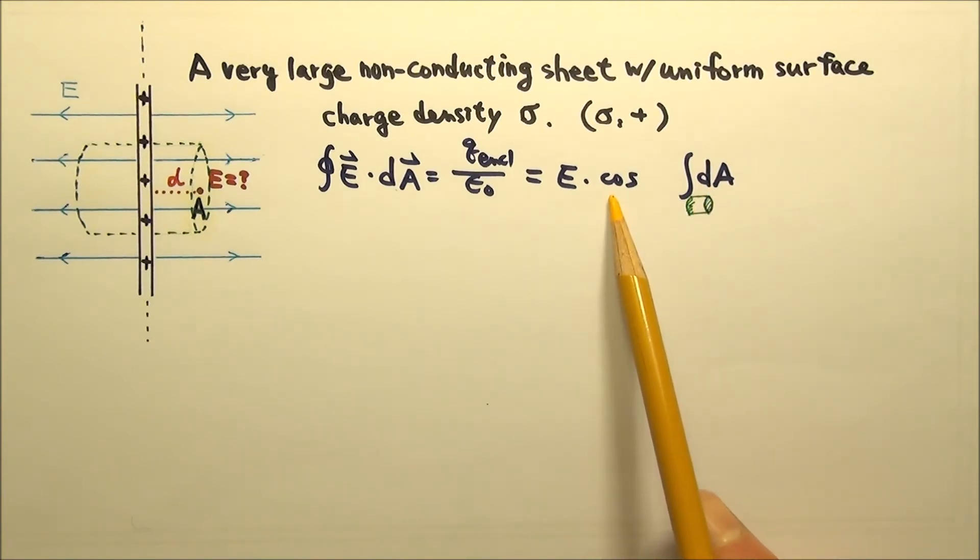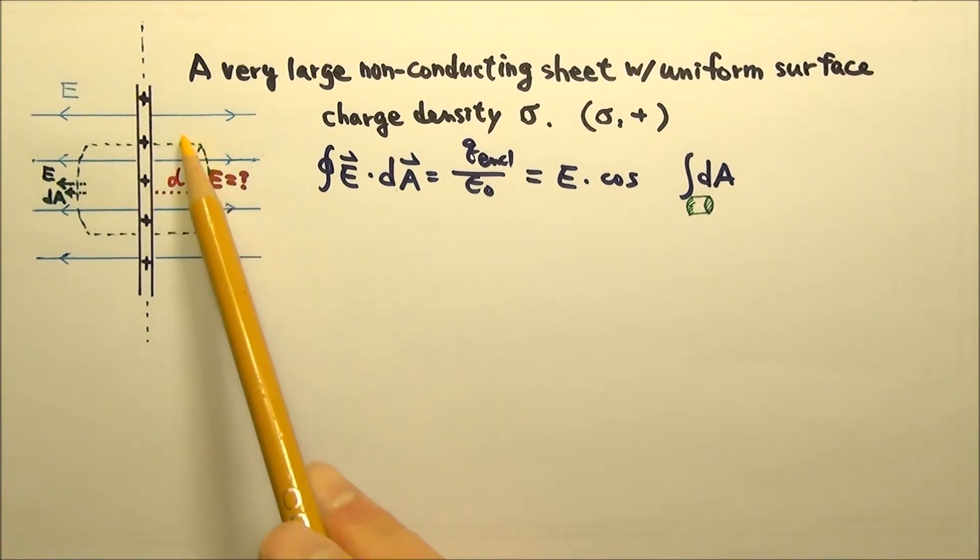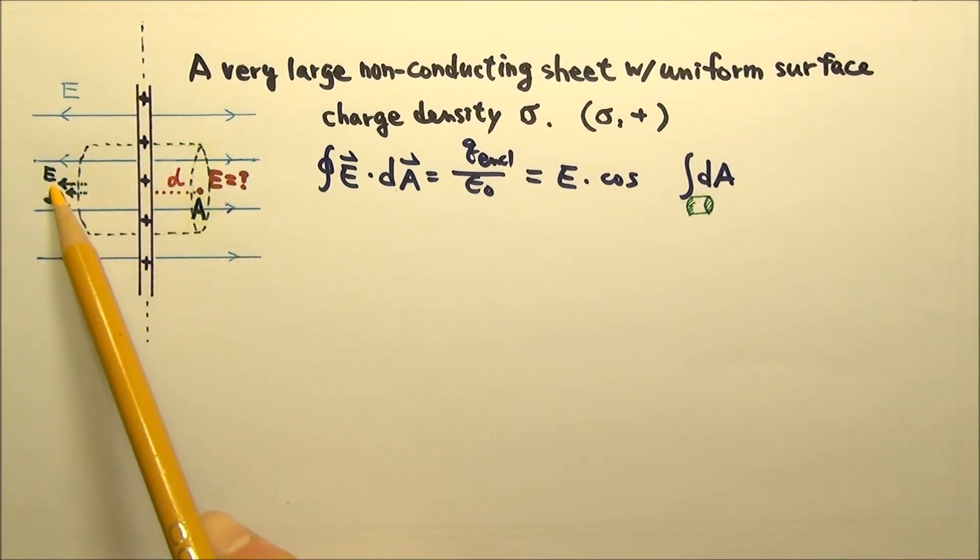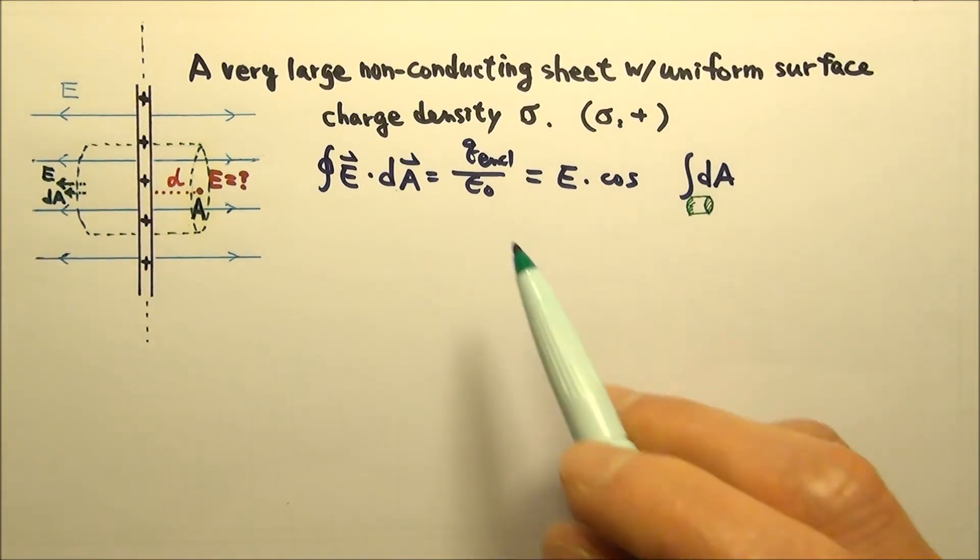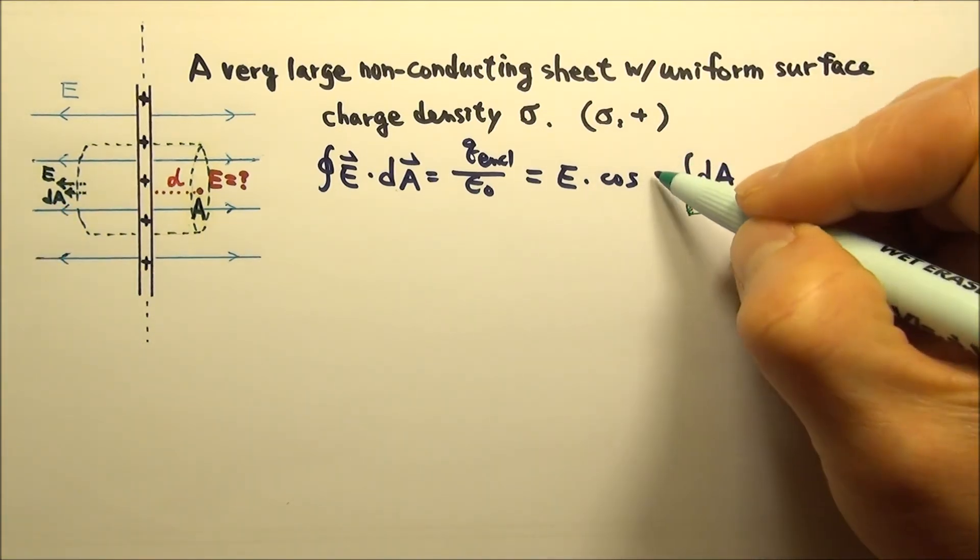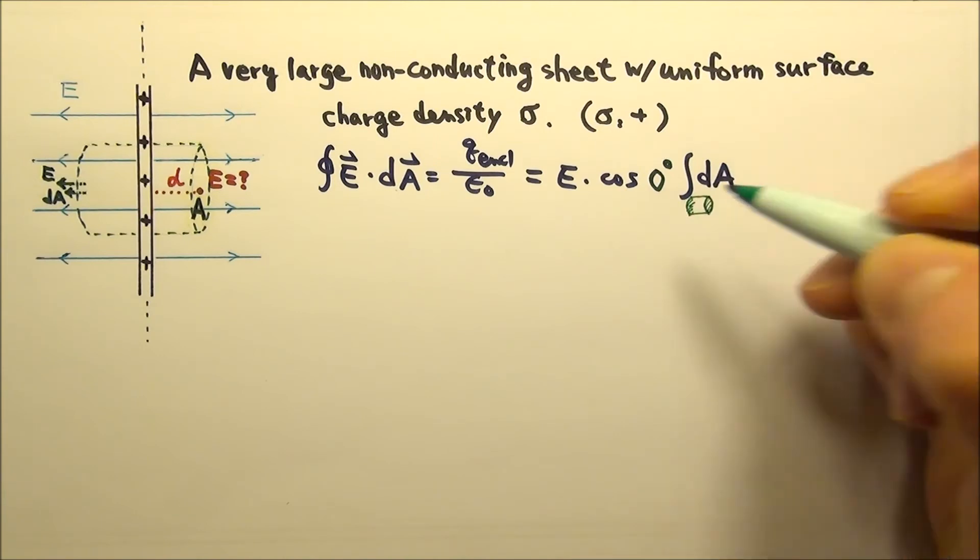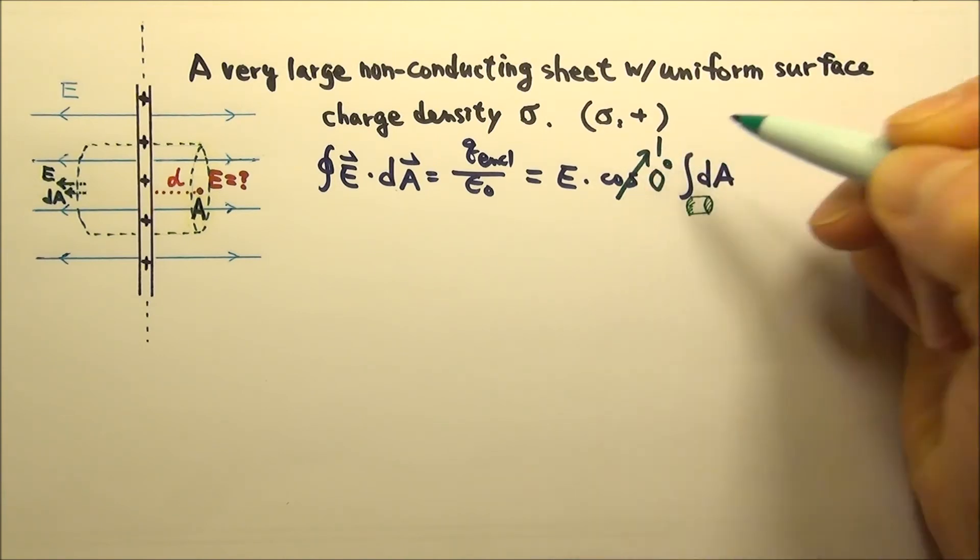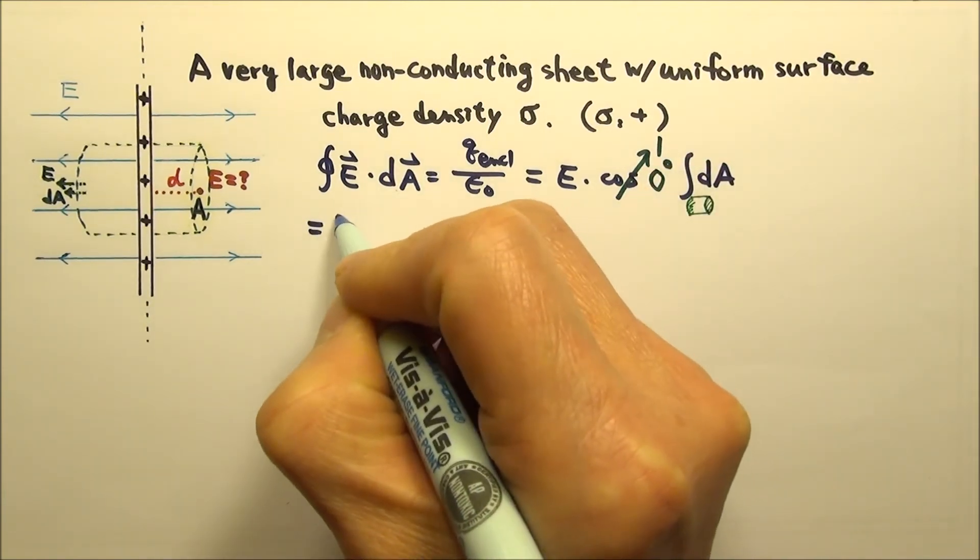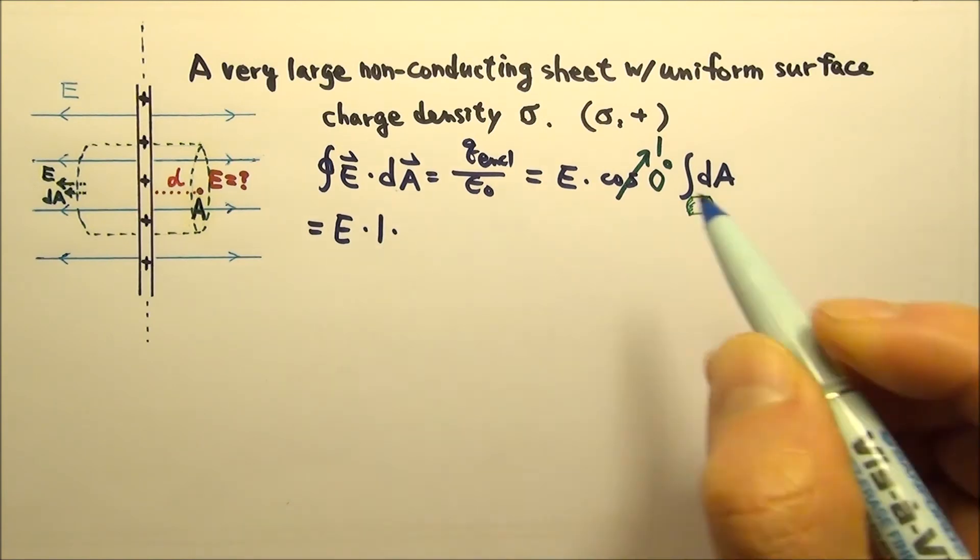What about the cosine? Everywhere on the two ends, the electric field and the dA are in the same direction. So we have the same angle, 0 degrees everywhere, and cosine 0 degrees is 1.